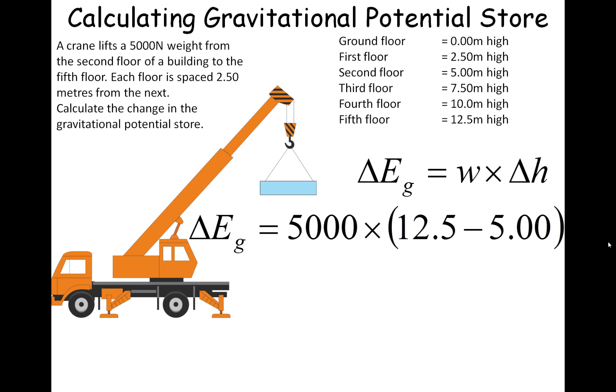Meanwhile, we can replace the letter W for weight with our 5,000 newtons. Once we've done that, we have the equation delta EG equals 5,000 times, in brackets, 12.5 minus 5, where 12.5 is the height of the fifth floor and 5 is the height of the second floor. That gives us a change in height of 7.5 meters.